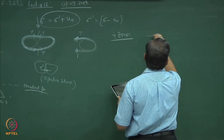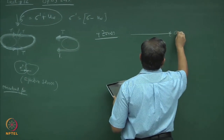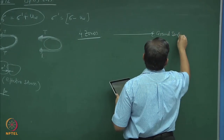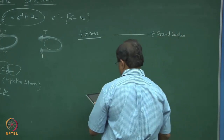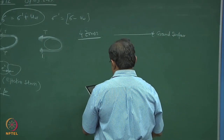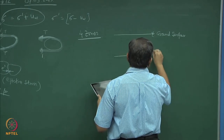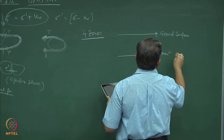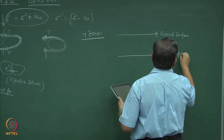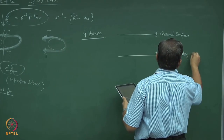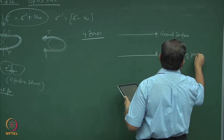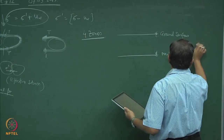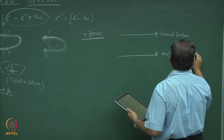The ground surface is here. There is something known as the maximum capillary zone, or sometimes we call it the maximum capillary rise.